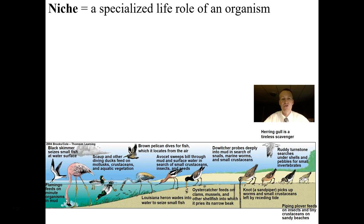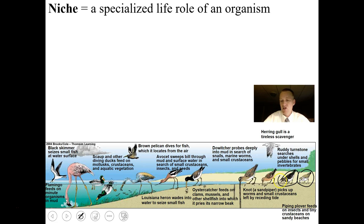Every species in nature is going to have a specialized life role. Looking at bird species at the beach — we have ducks, flamingos, and shorebirds. Every single species has a different sized beak, a different length of beak, a different thickness of beak, and a different leg size, and they exploit different elements of the habitat.